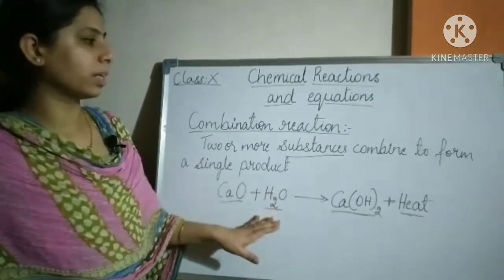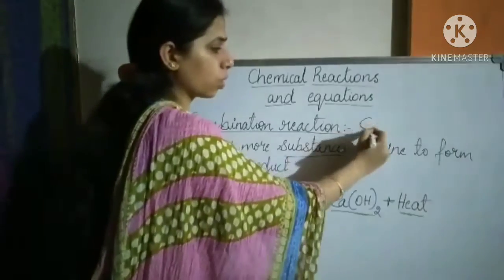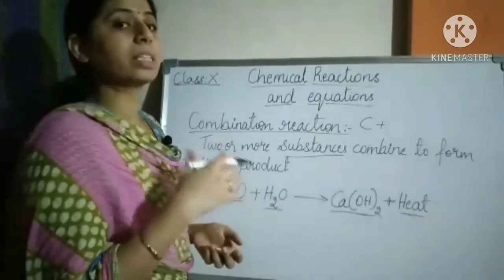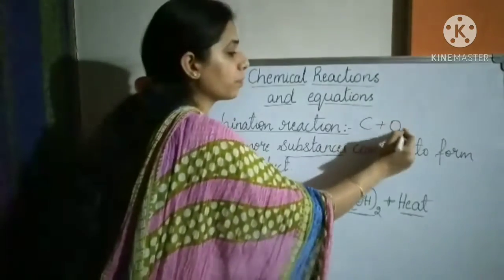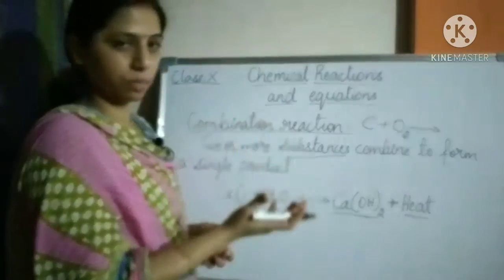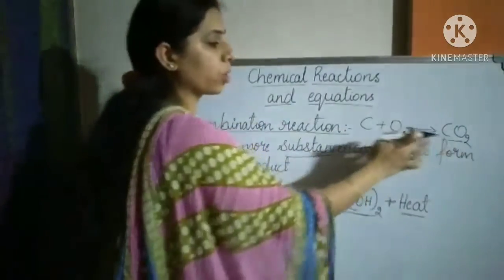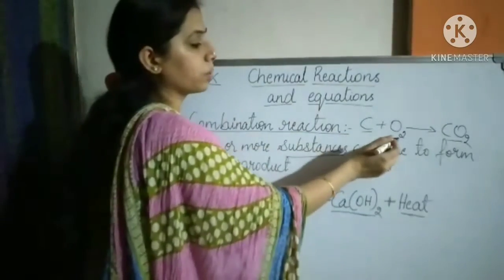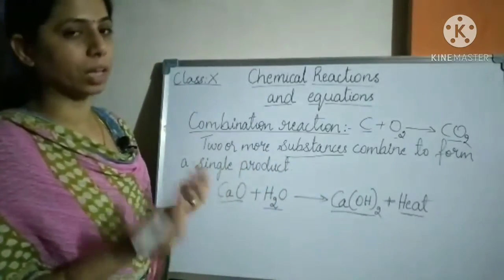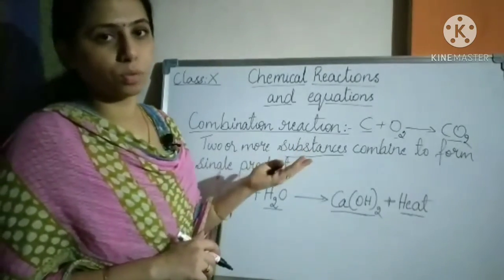This is an example of an exothermic reaction. Another main example is the burning of coal. Coal is carbon, and it reacts with oxygen. Carbon plus oxygen produces CO2. CO2 is a single product formed by the combination of two reactants — carbon and oxygen. Even if you have three or four reactants, if a single product is formed, it is a combination reaction.